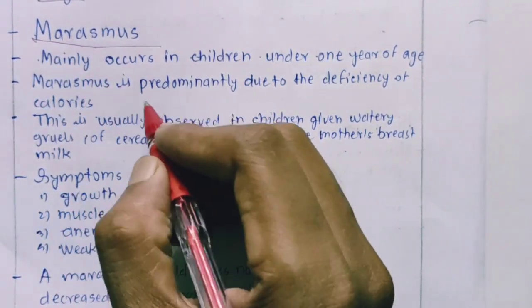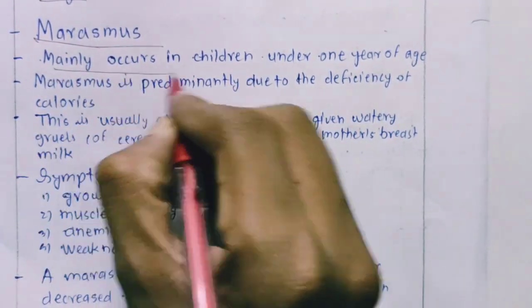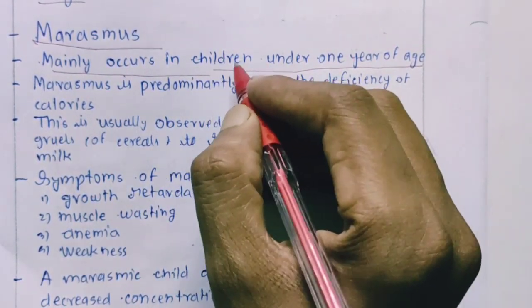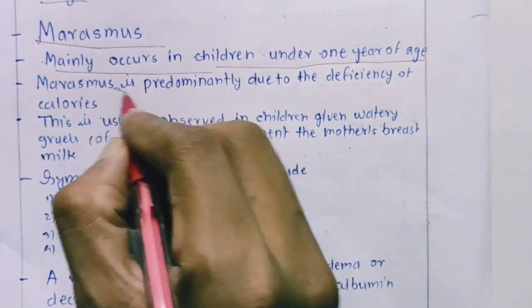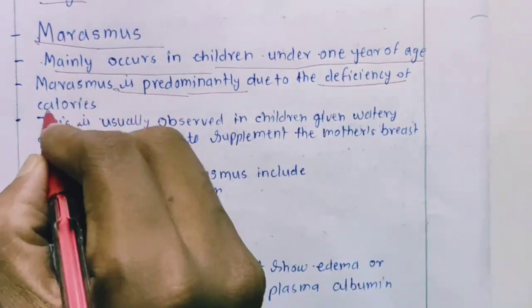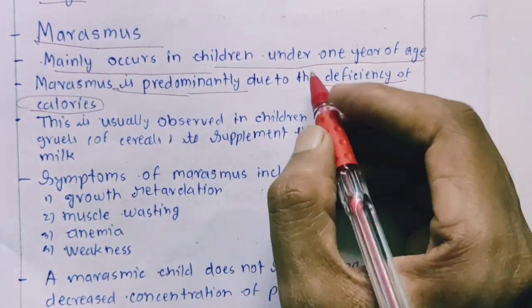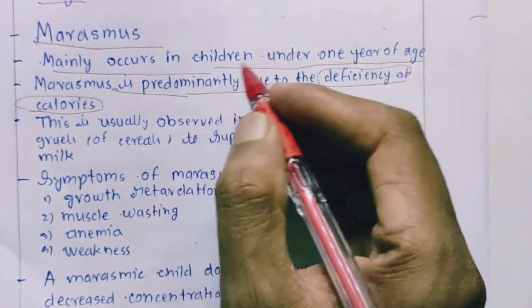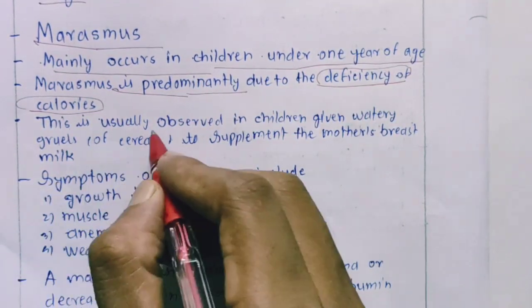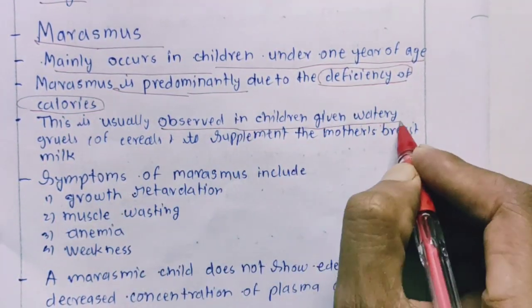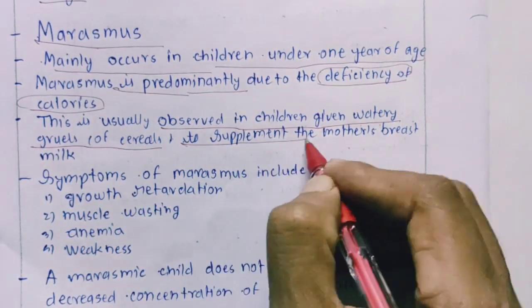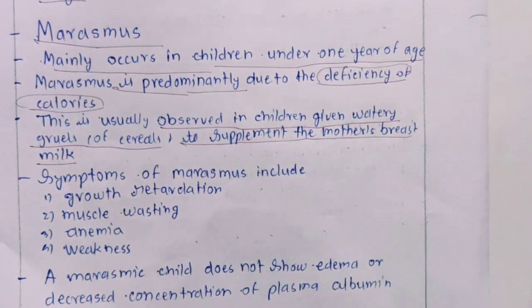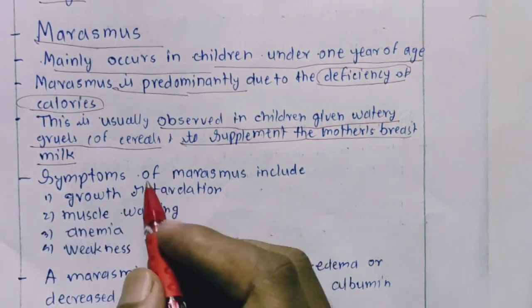After Kwashiorkor, we will look at Marasmus. Marasmus mainly occurs in children under 1 year of age — it is seen in infants less than 1 year old. Marasmus is predominantly due to deficiency of calories. It is usually observed in children given watery gruels of cereals to supplement the mother's breast milk.